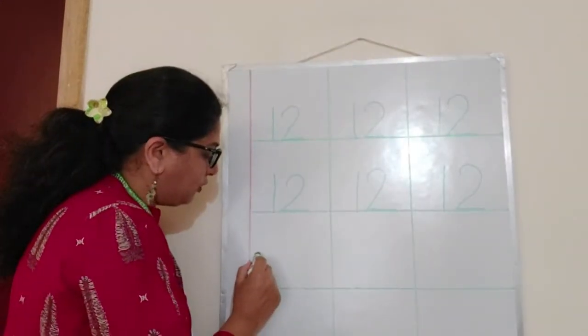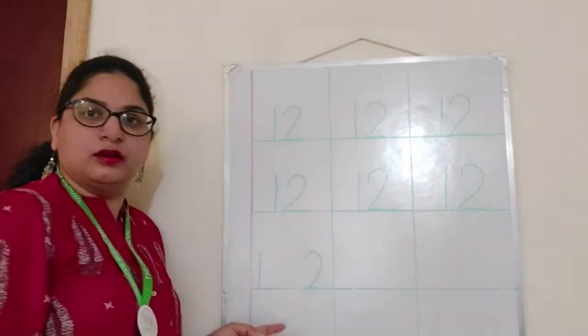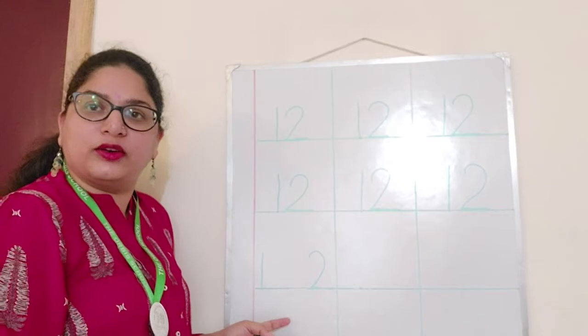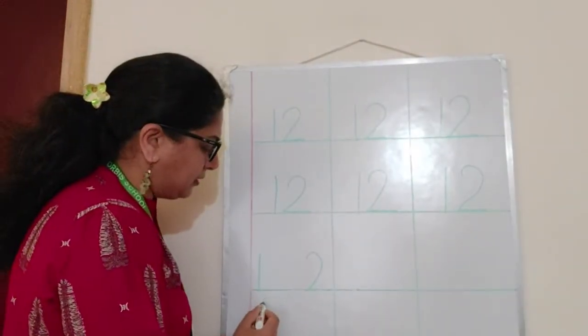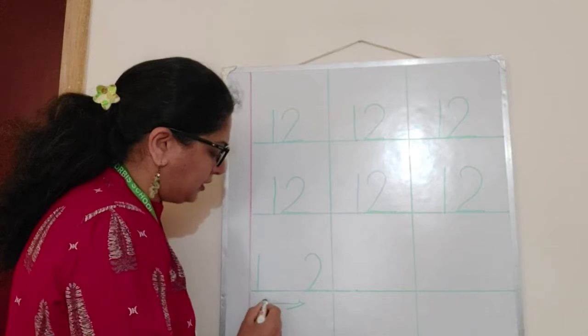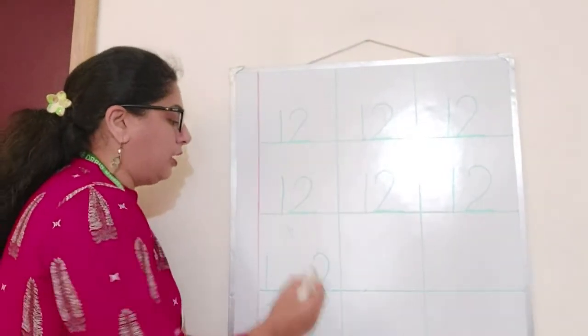Will you write 1 over here and 2 over here? Is it correct children? No, you can't have so much distance. See there is lot of distance. You can't have. This is wrong.